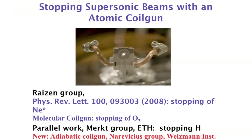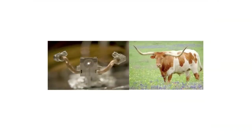This adiabatic coil gun is in some sense the ideal or perfect decelerator because it causes no loss of phase space density. I think one can now just take this and move on to doing science. This is a picture of the coil gun looking head-on down the bore — I like it because it's illuminated from the back, proving as I tell students that there is light at the end of the tunnel.